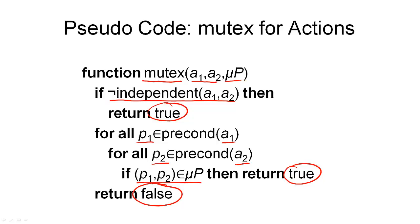Regarding the time complexity of this algorithm, it consists of two parts, and this is simply O(B²), where B is the maximum number of preconditions and effects per action.